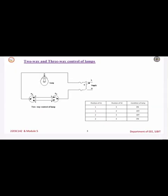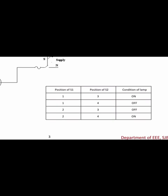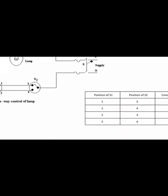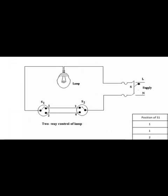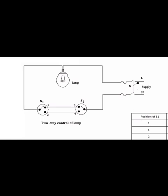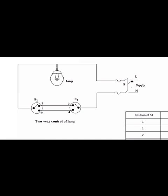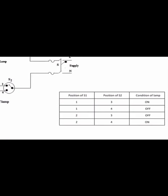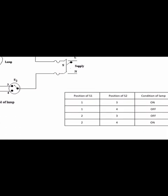Considering the truth table with four different possible combinations — S1 position, S2 position, and lamp condition: when S1 is at one and S2 at three, closed path, lamp ON. When S1 is at one and S2 at four, open circuit, lamp OFF. When S1 is at two and S2 at three, open circuit, lamp OFF. When S1 is at two and S2 at four, closed path, lamp ON.